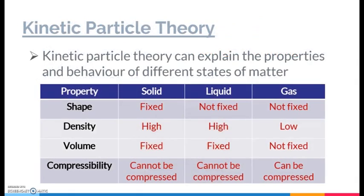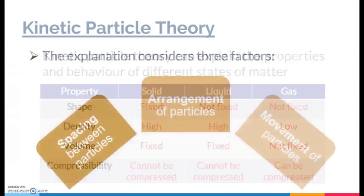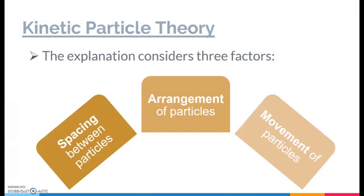The kinetic particle theory is so useful that we can actually use it to explain the properties and behavior of different states of matter. We covered shape, density, volume, and compressibility at the start of this video. The kinetic particle theory can help us understand why they actually differ. To do that, we consider three factors in terms of the particles: firstly, the spacing between the particles; secondly, the arrangement of the particles; and last but not least, the movement of the particles. This forms the mnemonic SAM — Spacing, Arrangement, Movement.